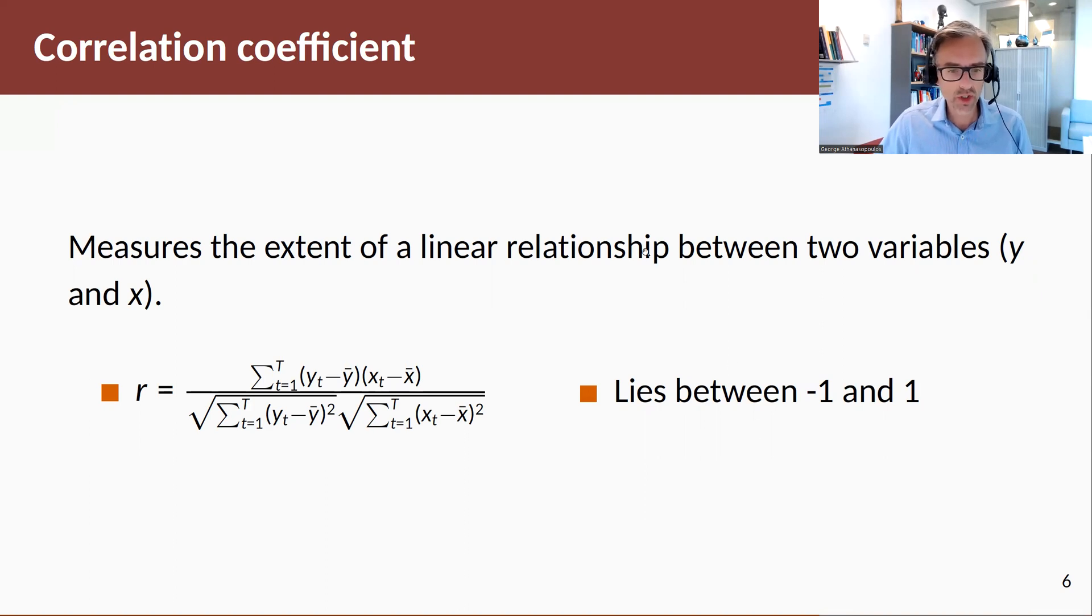Now the correlation coefficient lies between negative one and one, where negative shows a strong negative relationship, one shows a positive or perfect positive relationship. As we get closer to zero, the relationship between the two variables becomes lower.